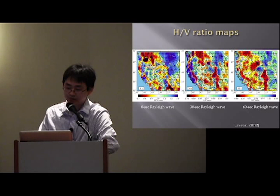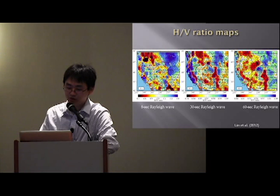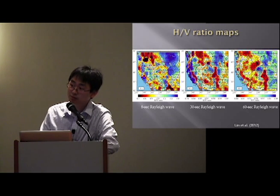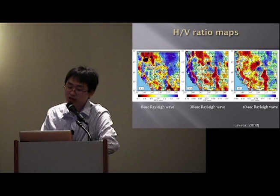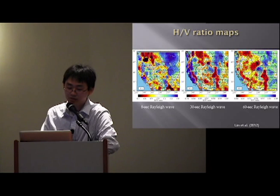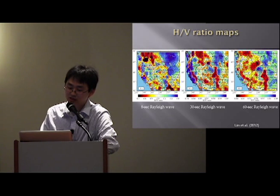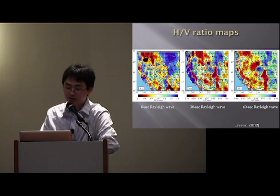We have 8-second constrained by ambient noise, and 30-second and 60-second based on earthquakes. You can see many features related to geologic structures. In particular, near the Columbia River Basin, at 8 seconds we actually see a very small H/V ratio suggesting high velocity in the top one kilometer. But going to 30 seconds we now see high H/V ratio, meaning that right beneath that high velocity there is actually low velocity. This is clearly related to the known structure in this area — the Columbia River Basalts are sitting on top of Columbia River Basin sediments.